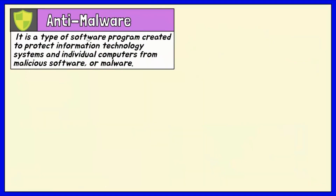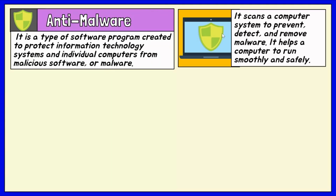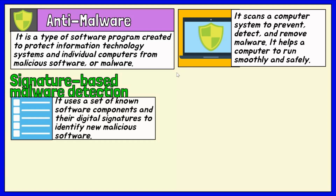Anti-malware is a type of software program created to protect information technology systems and individual computers from malicious software or malware. Anti-malware programs scan a computer system to prevent, detect, and remove malware. Anti-malware uses three strategies to protect systems from malicious software.